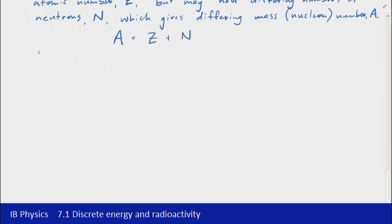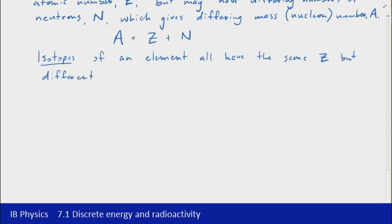Isotopes of the same element, this is a term that we need to be familiar with. Isotopes of an element will all have the same Z value, but different A values. So when we're talking about isotopes, we're basically saying it's the same element, but it has different mass numbers.